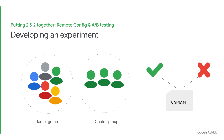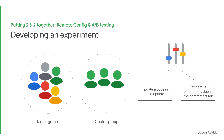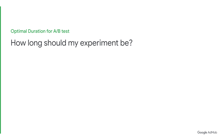If there is a clear winner during the experiment, you'll be given the option to roll out that winning variant in the Firebase console. Rolling out the variant means giving every user who was targeted in your experiment the same values as the winning variant. If you only targeted a small portion of your users and now want all users to get the same parameter values as your winning variant, you can end the experiment and edit your Remote Config parameters to use the winning variant values and update the condition to target all users in your app.